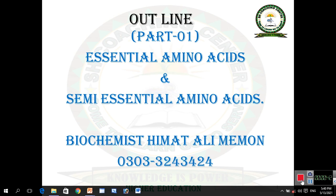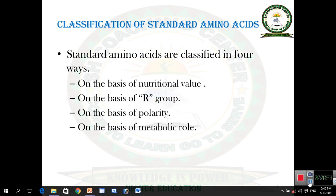Now in this class we will discuss about the semi-essential amino acid and essential amino acid. Standard amino acids are classified in four ways: first on the basis of nutritional value, second on the basis of R group, third on the basis of polarity, and fourth on the basis of metabolic role.